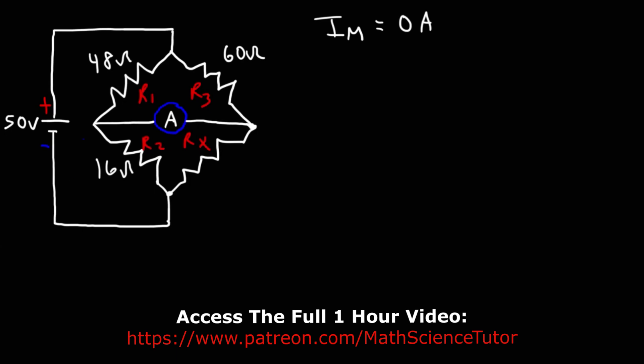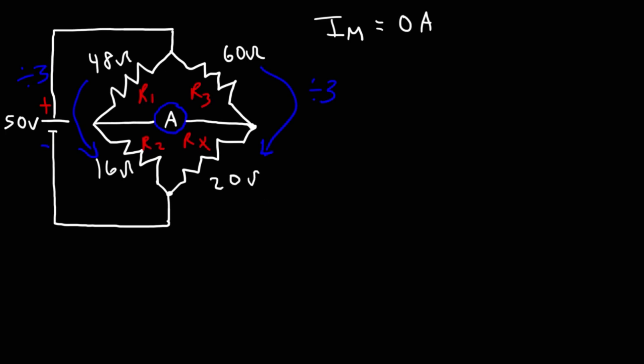So looking at R2 and R1, notice that if we multiply 16 by 3, we can get 48. Or if we divide 48 by 3, we'll get 16. So likewise, if we divide 60 by 3, we will get Rx, which is 20. So I did it a little different than in the last one. In the last example, I multiplied this resistor by some number to get the other one.